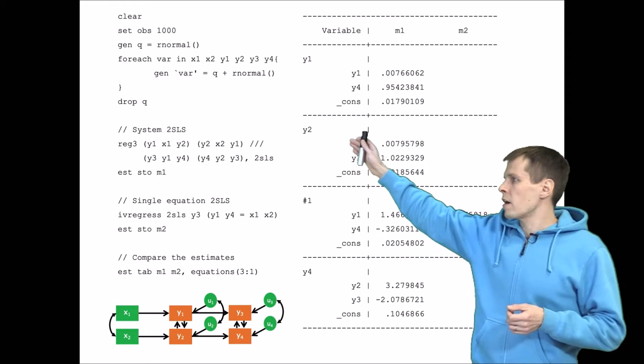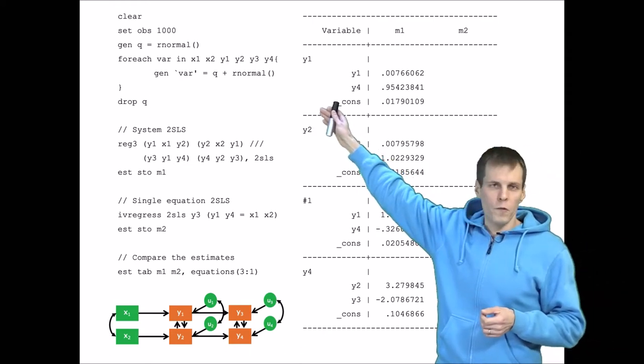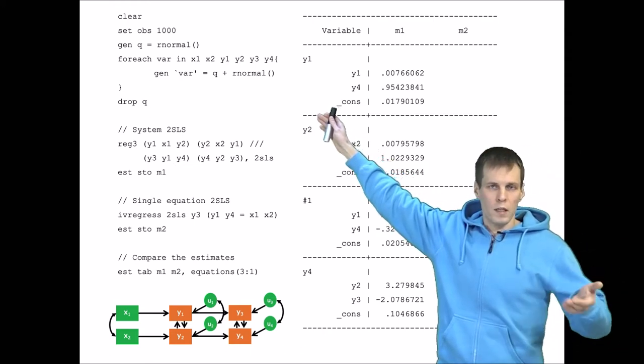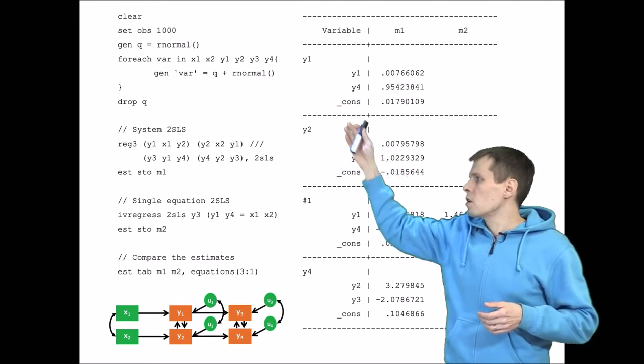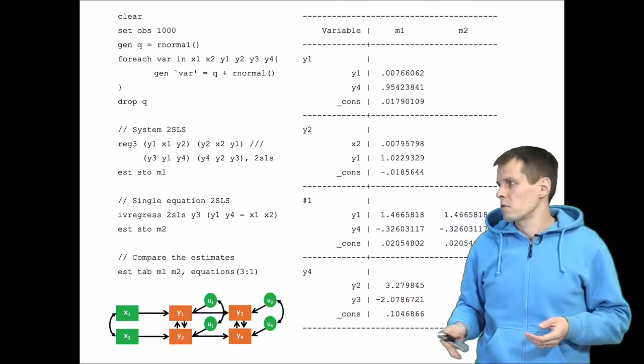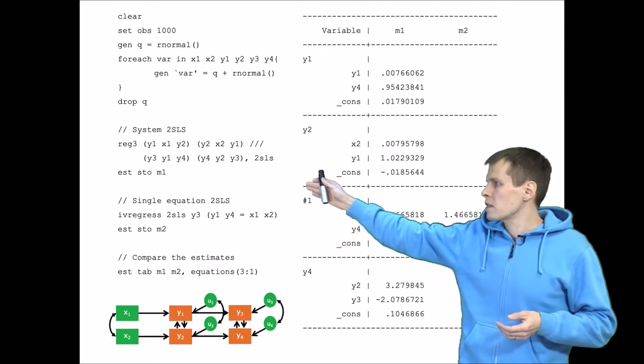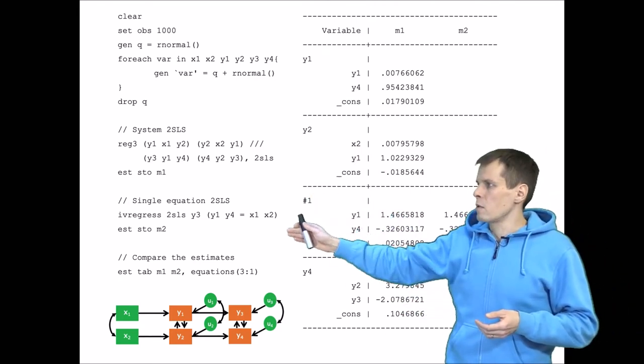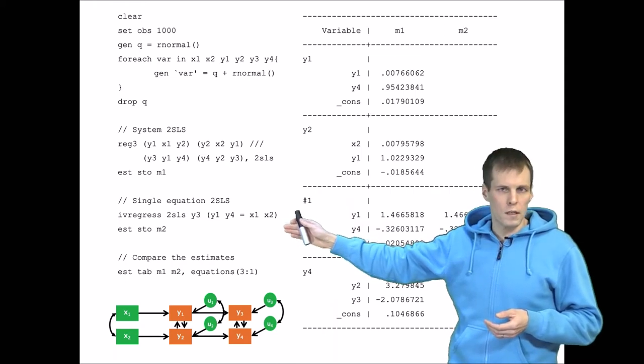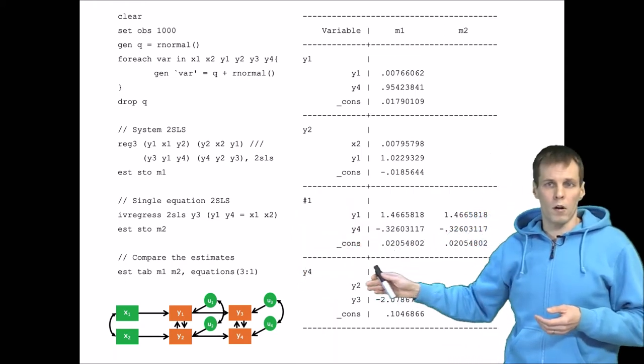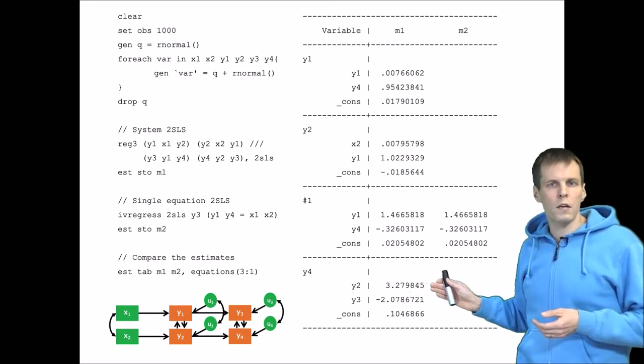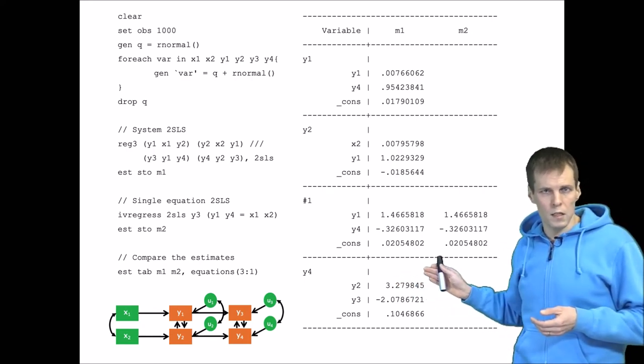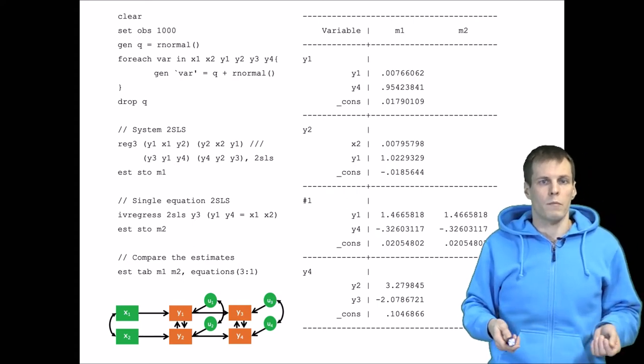We generate random variables, generate correlated random variables, then generate x1, x2, y1, y2, y3, and y4 that have some correlations. Then we estimate with the systems estimator, store it, then estimate the single equation two-stage least squares, and compare these estimates. We can see that they are the same. So running a system 2SLS is the same as estimating each equation separately.